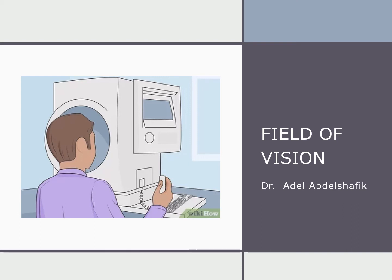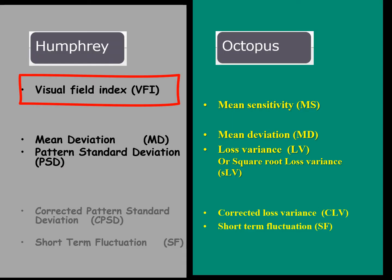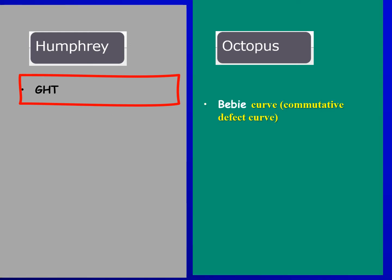This is an updated version of the lecture on field of vision. We have the Humphrey visual field index, available in another presentation with a link in the description. In the Humphrey we have the glaucoma hemifield test, and in the Octopus we have the BB curve.